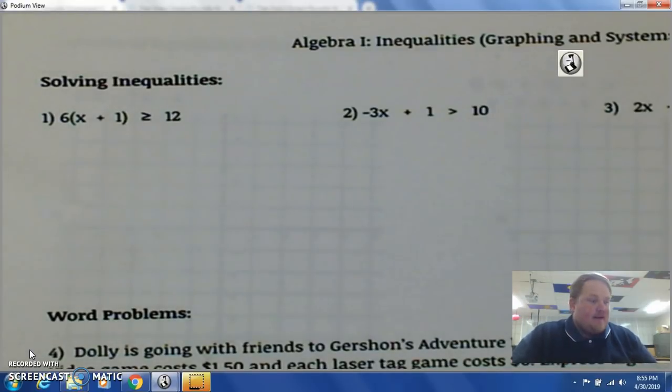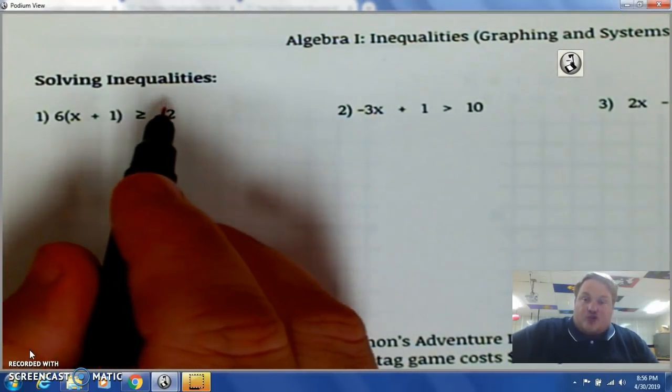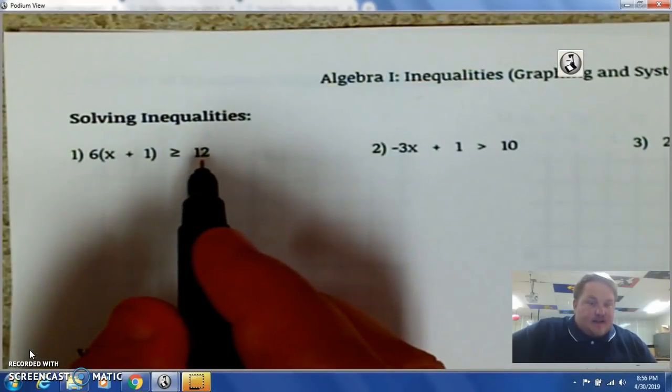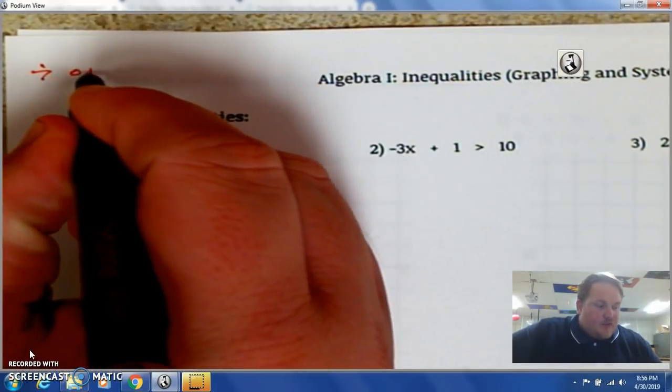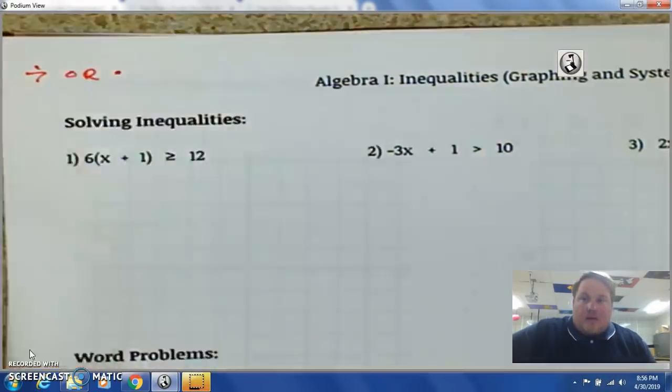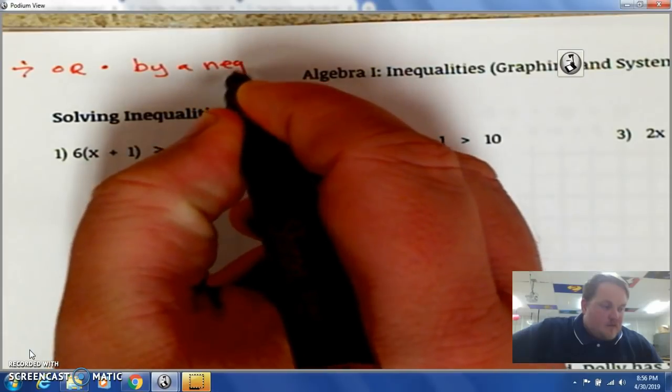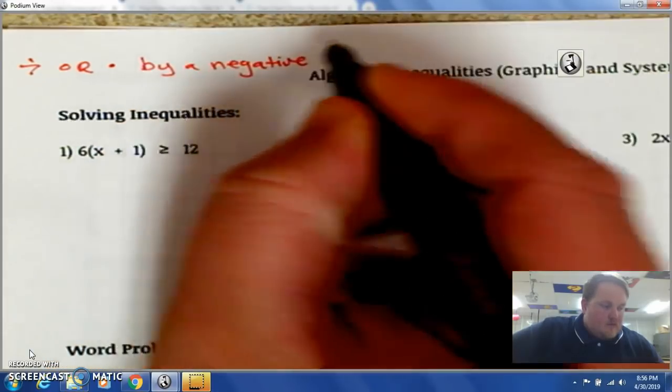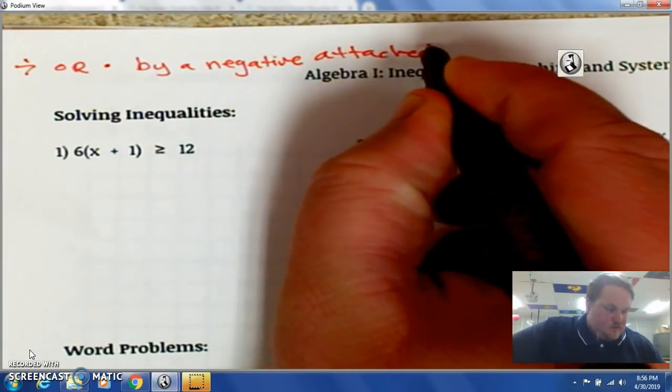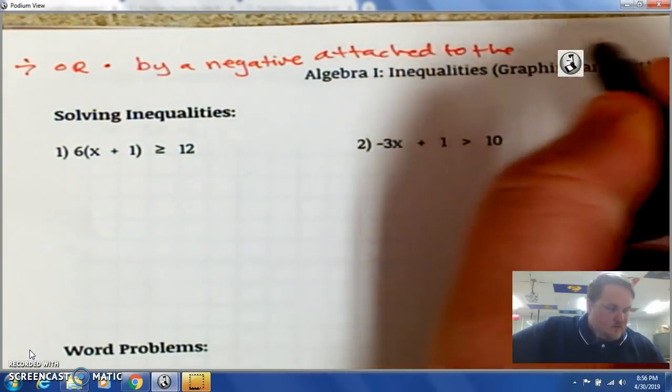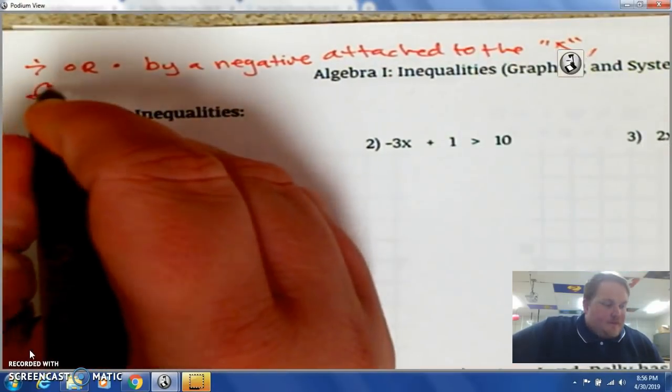So, number one, right off the bat. You have 6 times x plus 1 is less than or equal to 12. Now, with inequalities, if you divide or multiply by a negative attached to the x, you flip the sign.